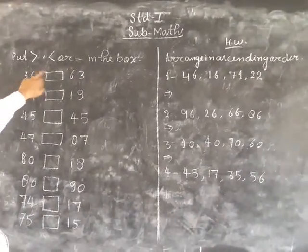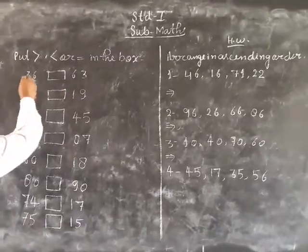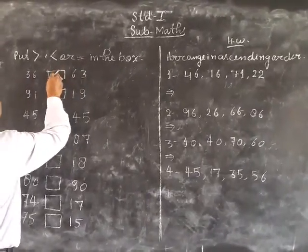36, 63. Greater number is 63. First number is shorter, second number is less than. So...